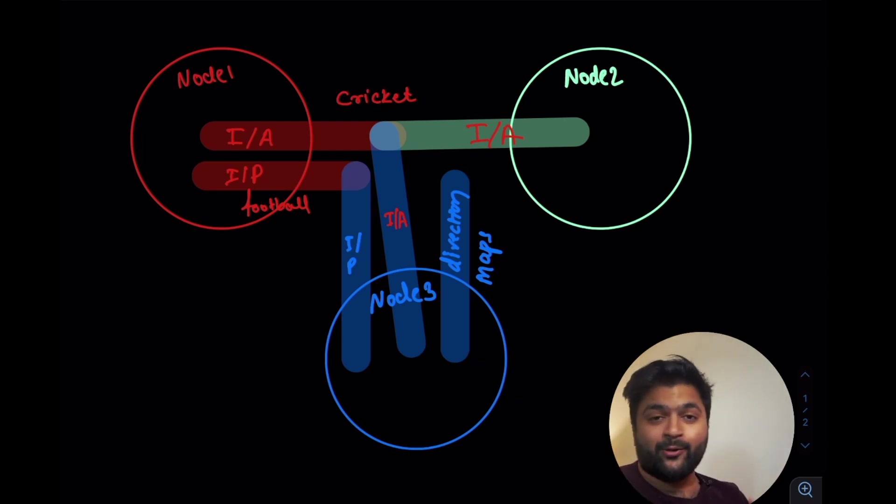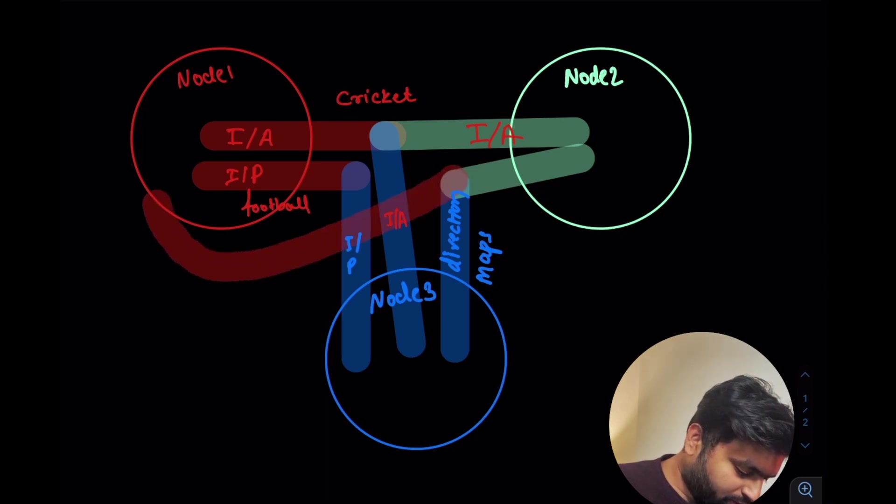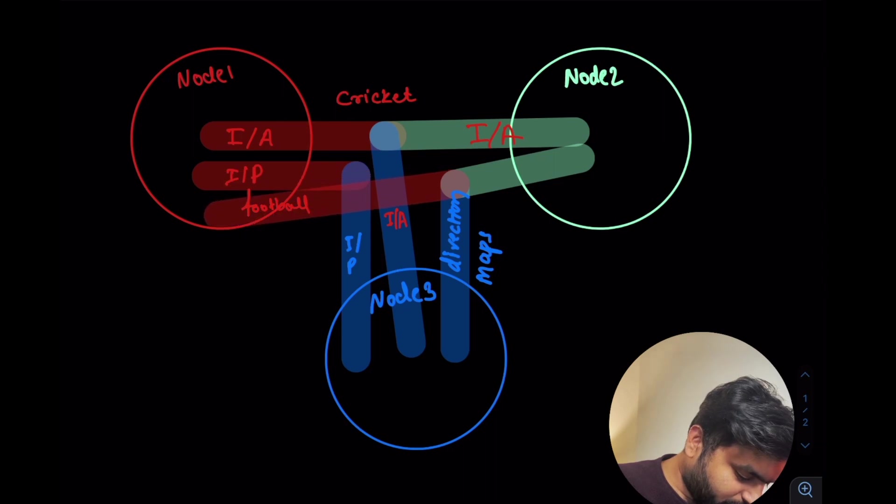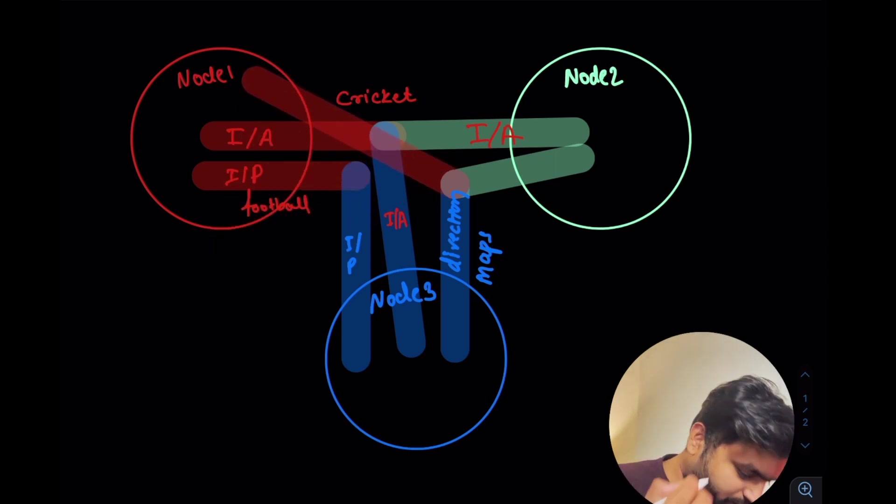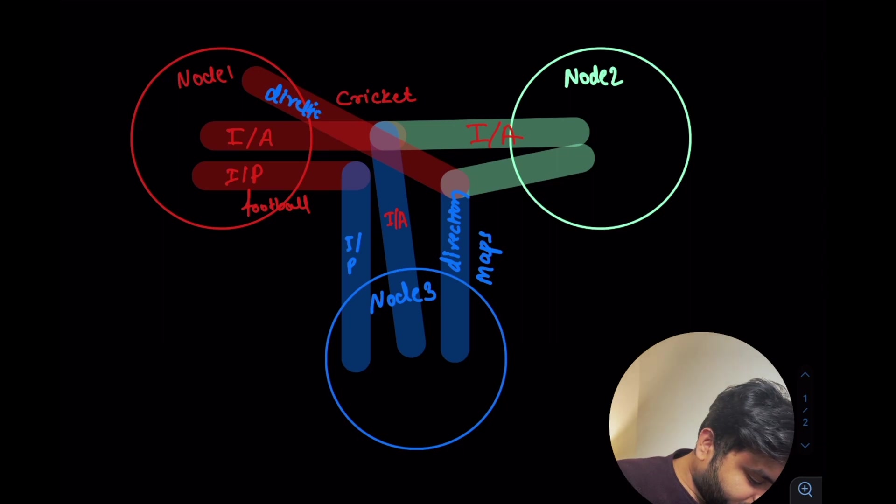In this case node 1 and node 2 are also interested because nobody wants to get lost. So node 2 will also subscribe to this topic as well as node 1 will also subscribe to this topic. They are now like node 2 as well as node 1 subscribed to node 3's topic maps. So in this case node 1 also now knows the direction and also node 2 knows the direction.